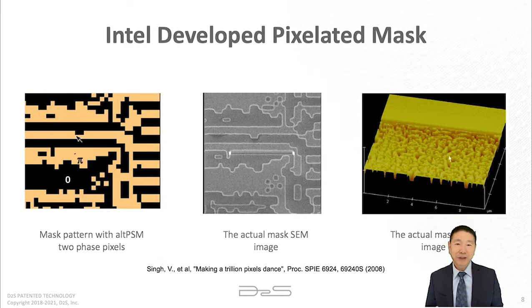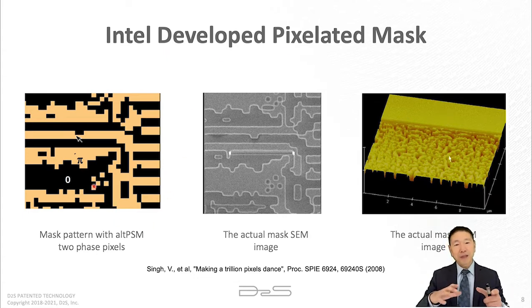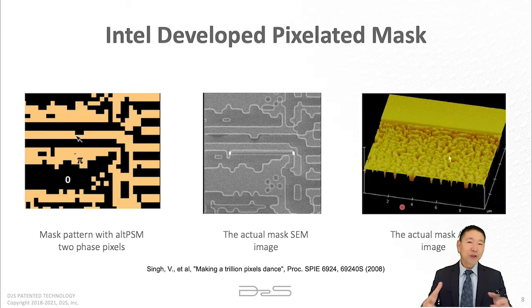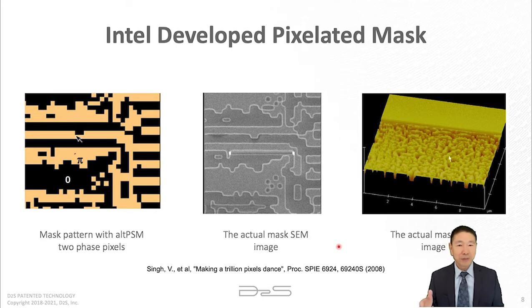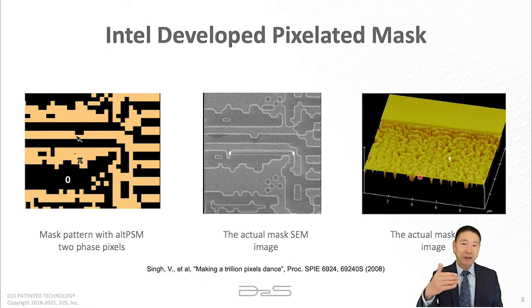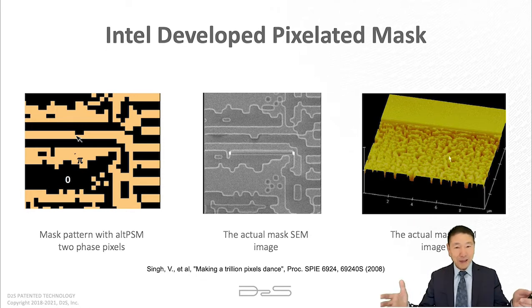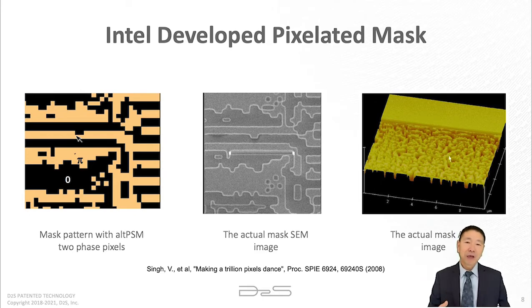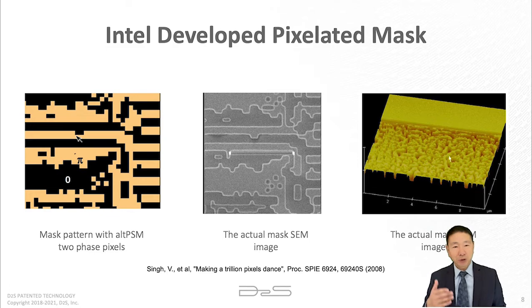Intel has a totally different approach — they call it a pixelated mask. They use a chromeless mask: it's glass etched to different depths, using strong interference to improve resolution. The challenge is those pixels are fairly small, requiring consideration of the mask 3D effect, for which they developed a mask 3D model. Inspection is also a real challenge: doing high-resolution mask plane inspection, you just see transparent glass, which is why they had to work with Applied Materials to use aerial image mask inspection to solve this problem.